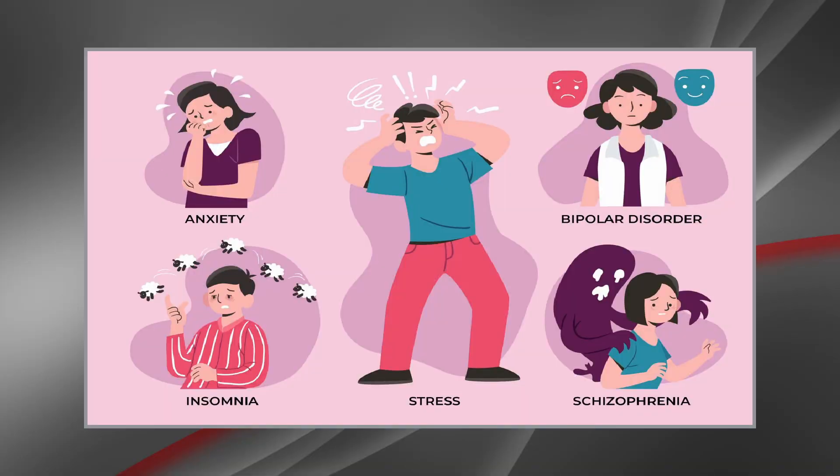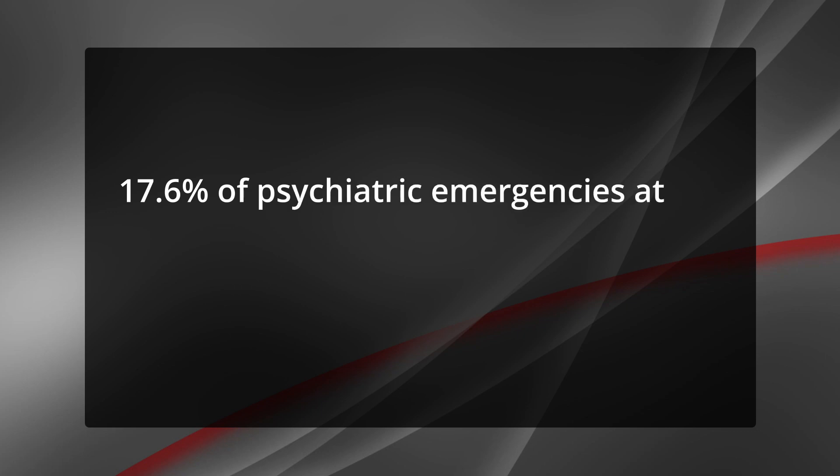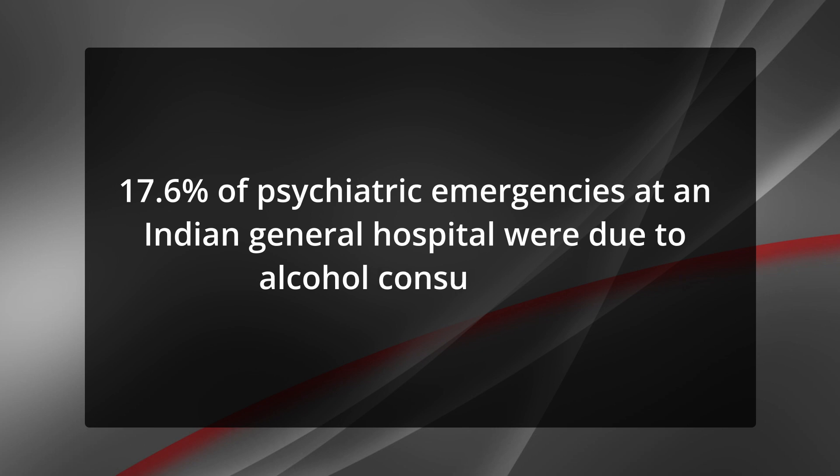6. Psychiatric complications: Drinking alcohol to deal with depression and anxiety has become a regular occurrence. At first it may help ease these conditions, but then it begins to reduce serotonin in the brain, leading to an increase in depression and anxiety as well as an increased need to consume more alcohol to feel better. This chronic usage can raise the risk of suicide, personality disorders and risk-taking behaviour. 17.6% of psychiatric emergencies at an Indian general hospital were due to alcohol consumption. A case-controlled study of suicides in Bangalore found that alcohol consumption was a major factor, increasing the risk of suicide by 25 times. Women married to alcohol abusers saw their risk of suicide increase by almost 6 times.